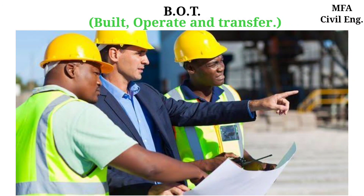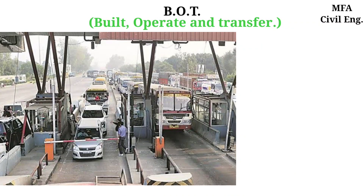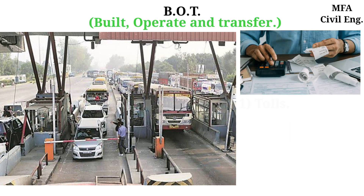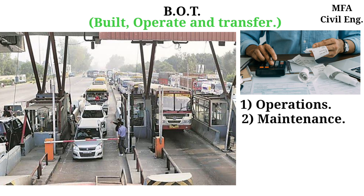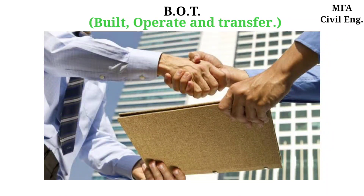The contractor operates the facility over a fixed term during which it is allowed to charge facility users appropriate tolls, fees, or rents which are sufficient to enable the contractor to recover its operation and maintenance expenses and its investment in the project, plus a reasonable rate of return. The contractor then transfers the facility to the government agency or local government unit concerned at the end of the fixed term.